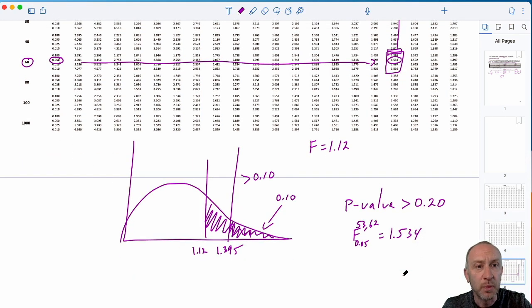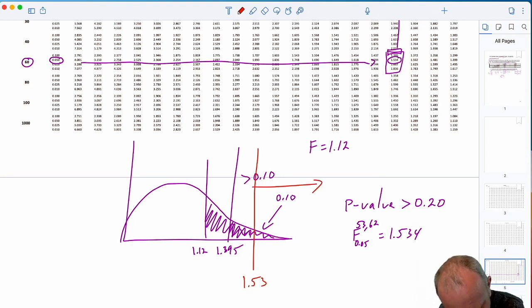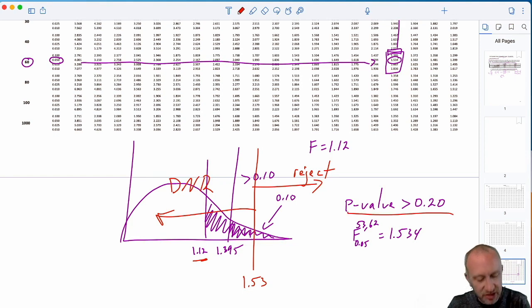So, we have everything that we need. That critical value, 1.53. That's somewhere way out here. That defines that rejection space. And there's that do not reject space, which is where we find our test statistic. Our p-value is also greater than 0.2.